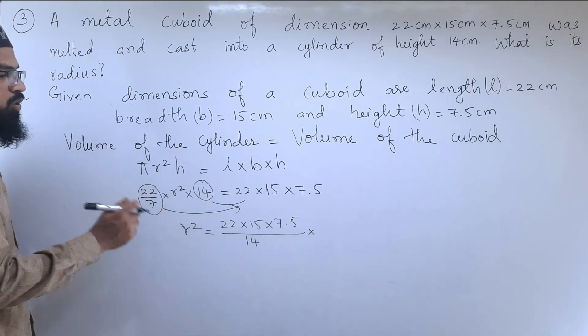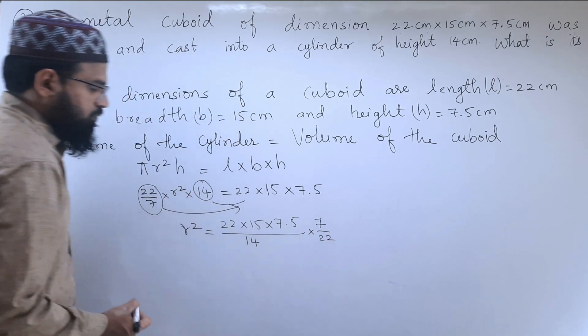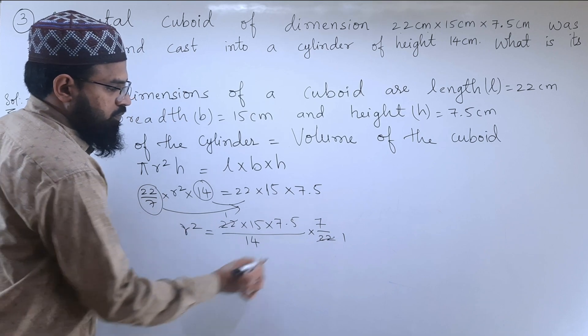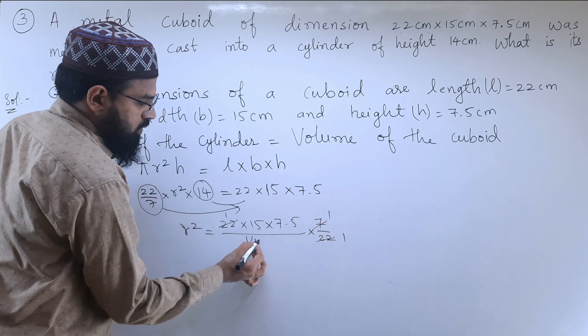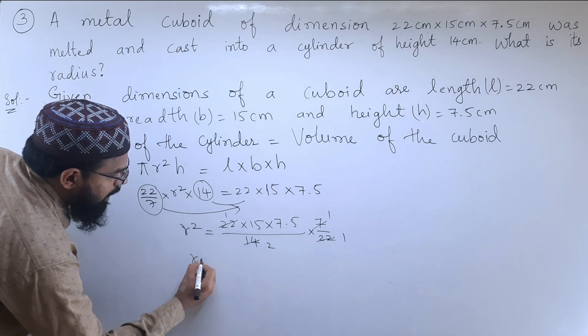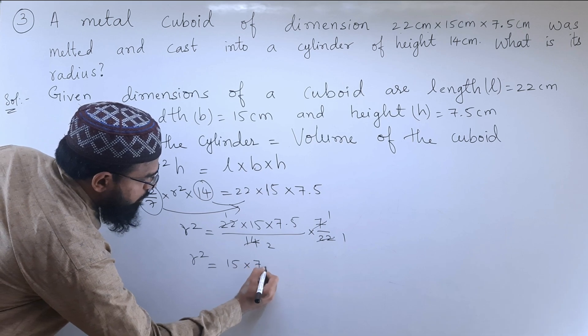This 22 by 7 will become 7 by 22. We have got R² is equal to 15 into 7.5.